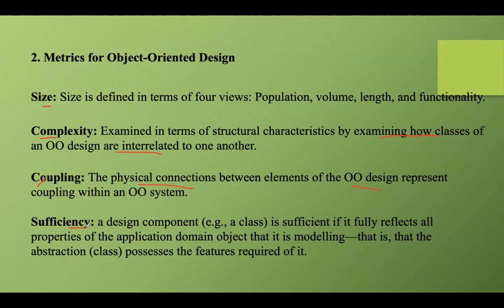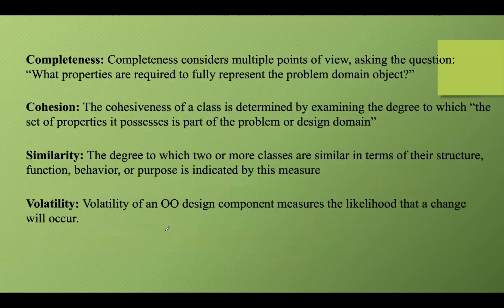The sufficiency metric evaluates whether a class has enough methods to fulfill its responsibilities; classes with too few methods may not encapsulate functionality effectively. Completeness assesses whether a class or module implements all required features as specified in requirements — incomplete implementations can lead to functionality gaps. Cohesion measures how related the methods of a class are. A low value indicates higher cohesion, which is desirable as it suggests that methods are closely aligned with the class's responsibilities. This metric is called Lack of Cohesion in Methods (LCOM), and cohesion among classes helps evaluate how well classes within a package or module work together.